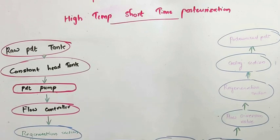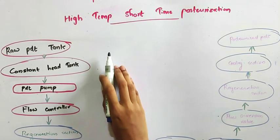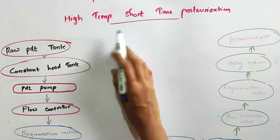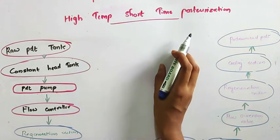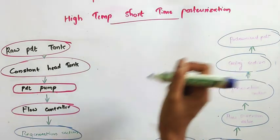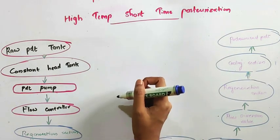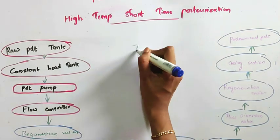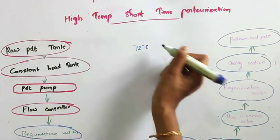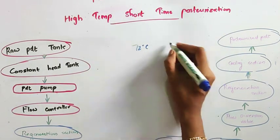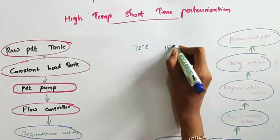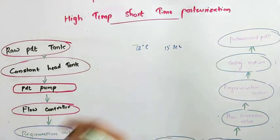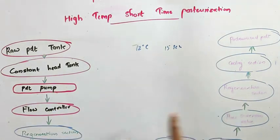Hello everyone. Today we are going to study about High Temperature Short Time pasteurization. It is a pasteurization technique where the product is heated at 72 degrees Celsius for a time period of 15 seconds.